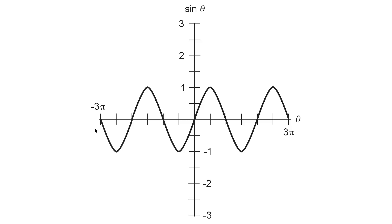So 2 pi radians is 360 degrees. 3 pi radians would be 540 degrees, or a cycle and a half — and you can see that quite clearly: one cycle and a half, and then another cycle and a half.